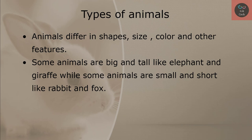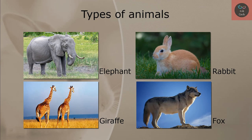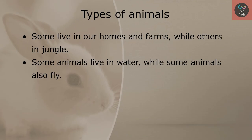Animals differ in shapes, size, color and other features. Some animals are big and tall like elephant and giraffe, while some animals are small and short like rabbit and fox. Some live in our homes and farms, while others live in the jungle. Some animals live in water, while some animals also fly.